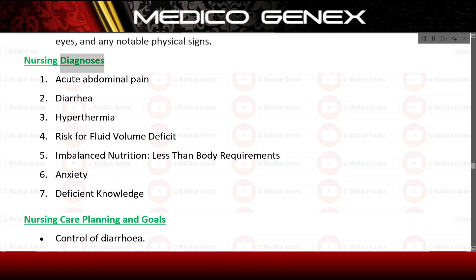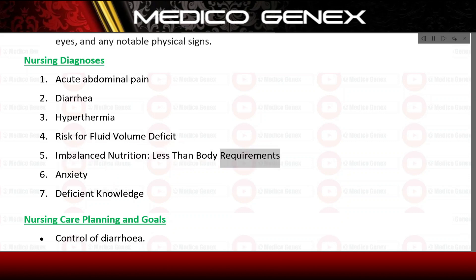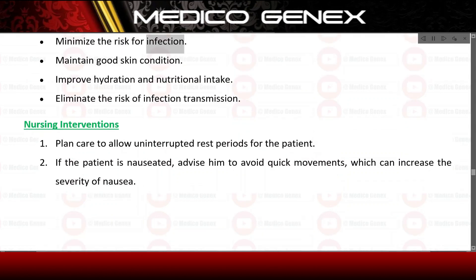Nursing diagnosis includes: acute abdominal pain, diarrhea, hypothermia, risk for fluid volume deficit, imbalanced nutrition less than body requirements, and anxiety. Nursing care planning goals: control of diarrhea, minimize the risk for infection, maintain good skin condition, improve hydration and nutritional intake, and eliminate the risk of infection transmission.